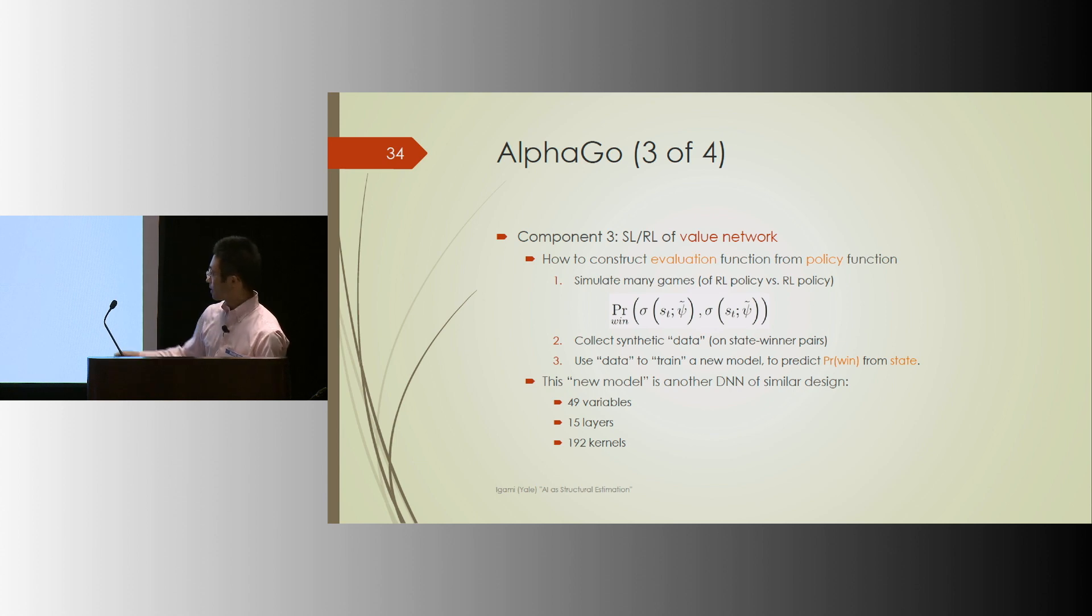This new model uses another flexible functional form, the deep convolutional neural network, with a similar design, 49 variables, 15 layers, 192 filters.